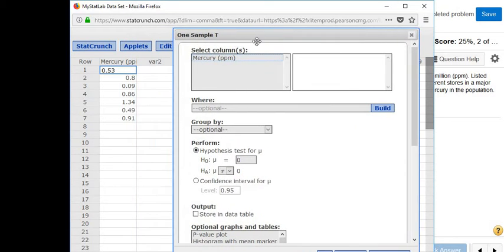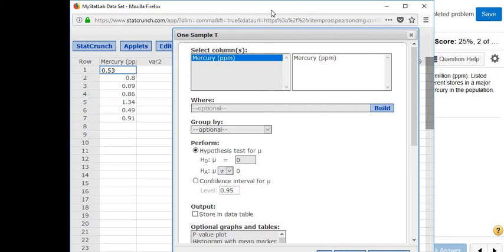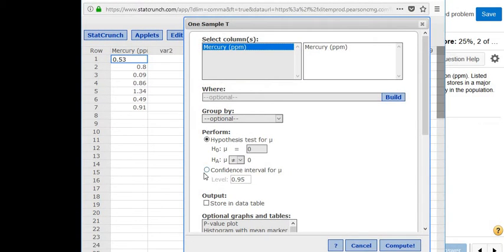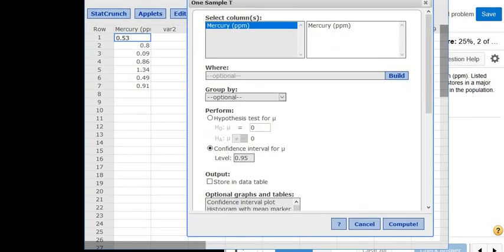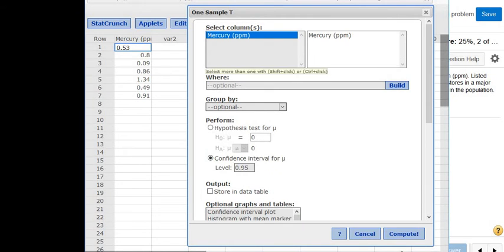We have to select the data. So you have to click here where it says mercury because that's the name of the column. And it's a confidence interval. Oh, I forgot to look at the confidence level. It's 95 percent. So everything looks good. You just click compute.